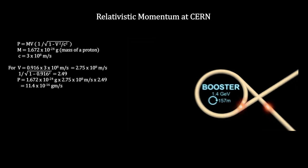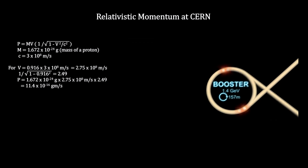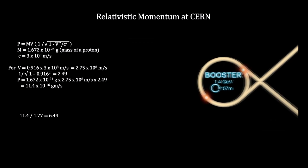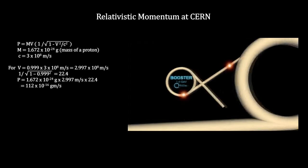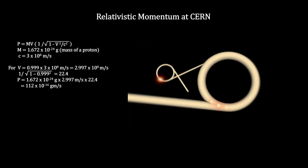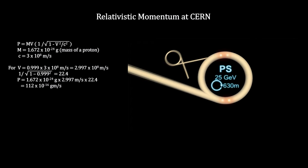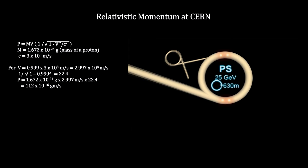The first booster accelerates the protons to 91.6% of the speed of light. The protons are then flung into the proton synchrotron. They circulate here for 1.2 seconds, reaching 99.9% of the speed of light. At this speed, their momentum has increased by more than 60 times.